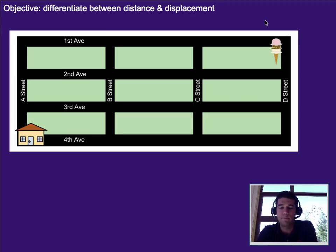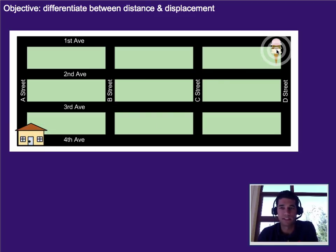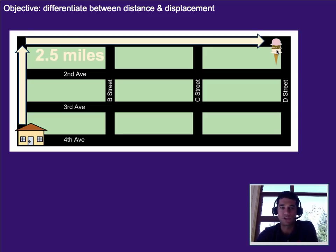I've got a little example here for you today. You've got your home sitting over here in the corner, and let's say you go and want to make a trip to get some ice cream on a hot summer day. You go ahead and make a walk — it's 2.5 miles. You go up a few blocks and over a few blocks, and it's two and a half miles to get there.